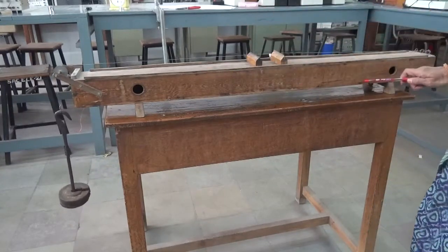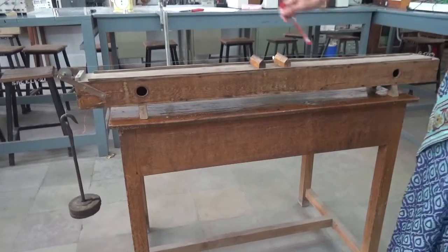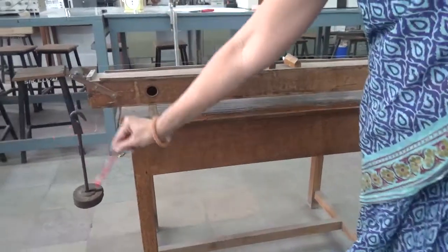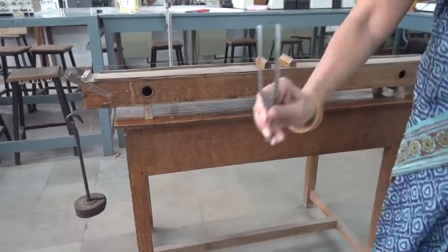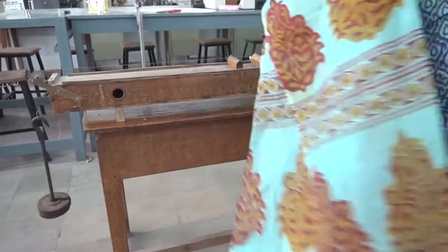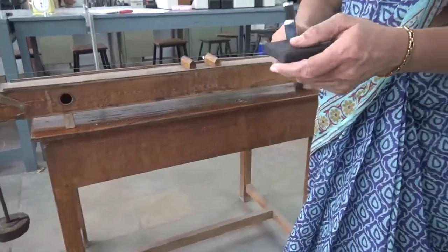This is a sonometer. You can see a hollow box here, and there is a steel wire attached to the weights. This is a tuning fork with a rubber mallet. First, let us understand what this sonometer is.